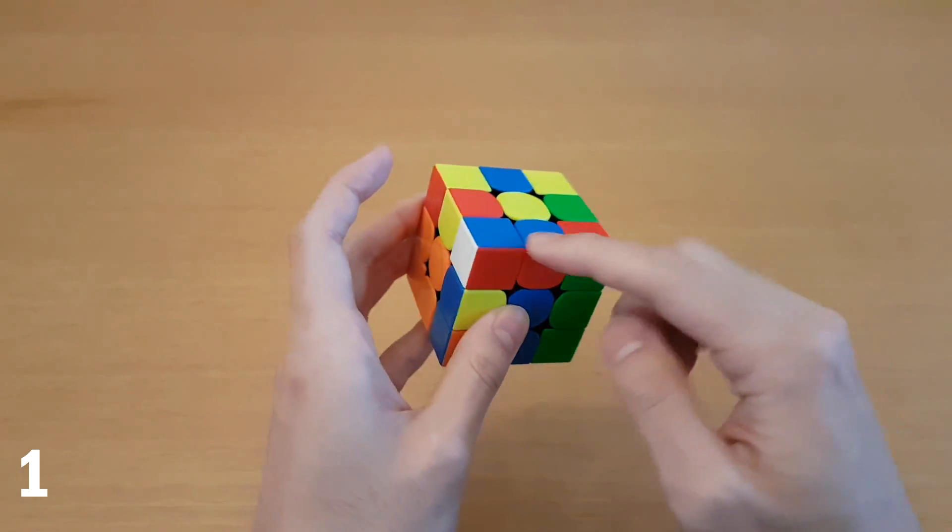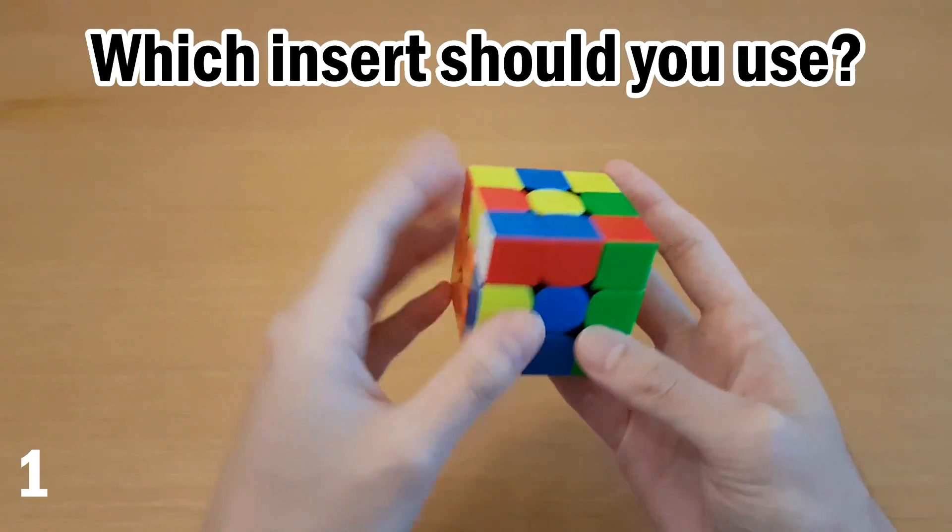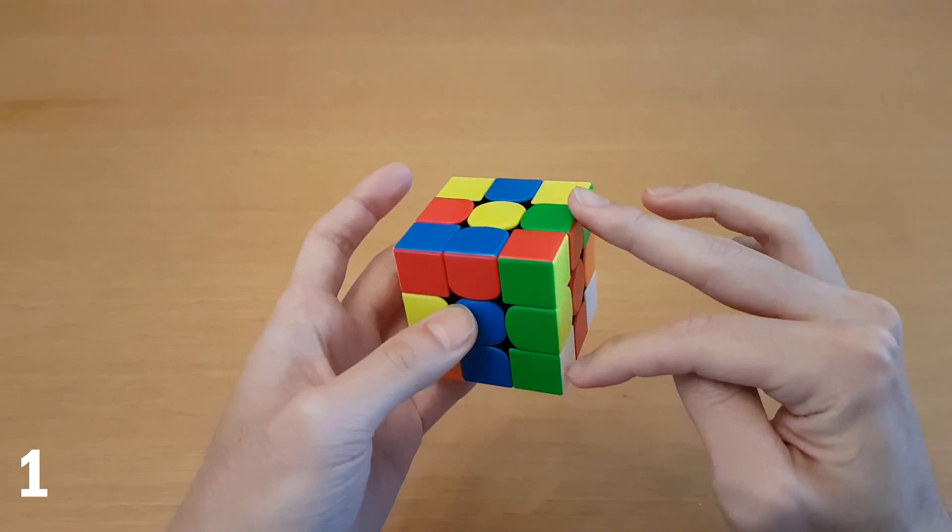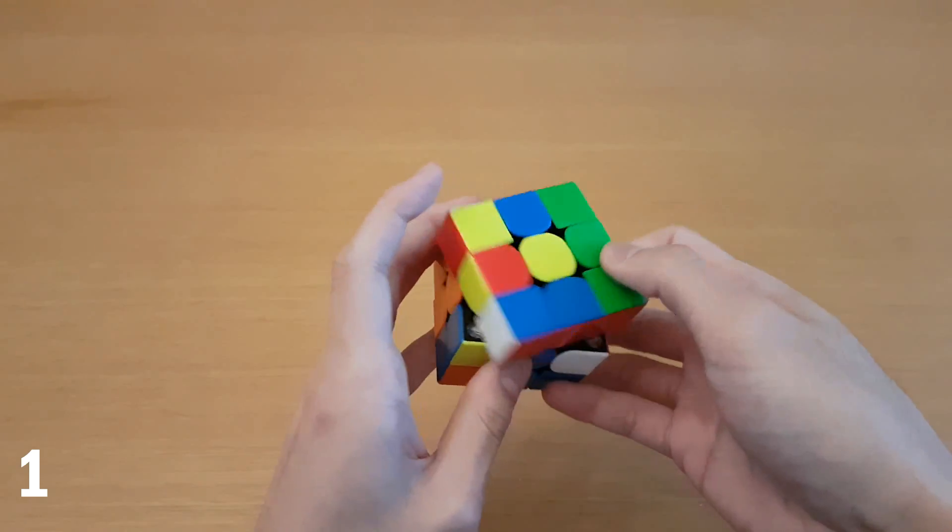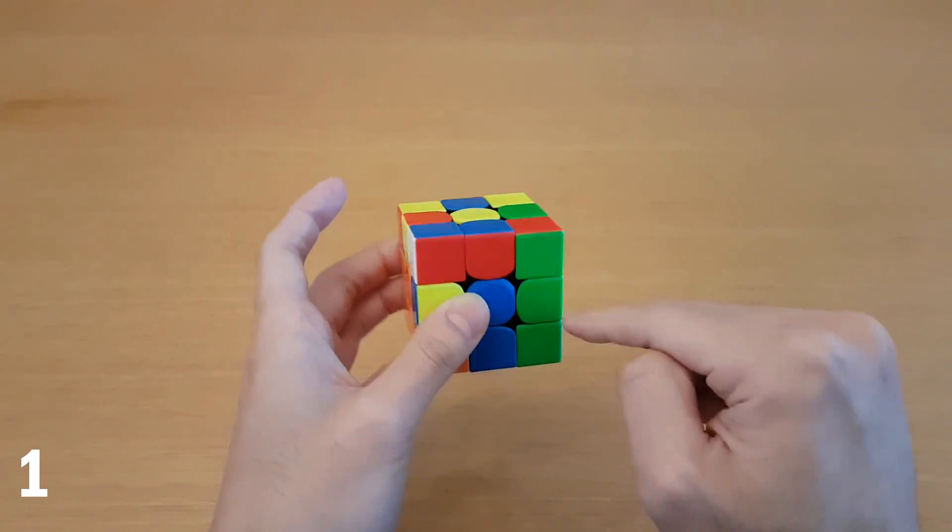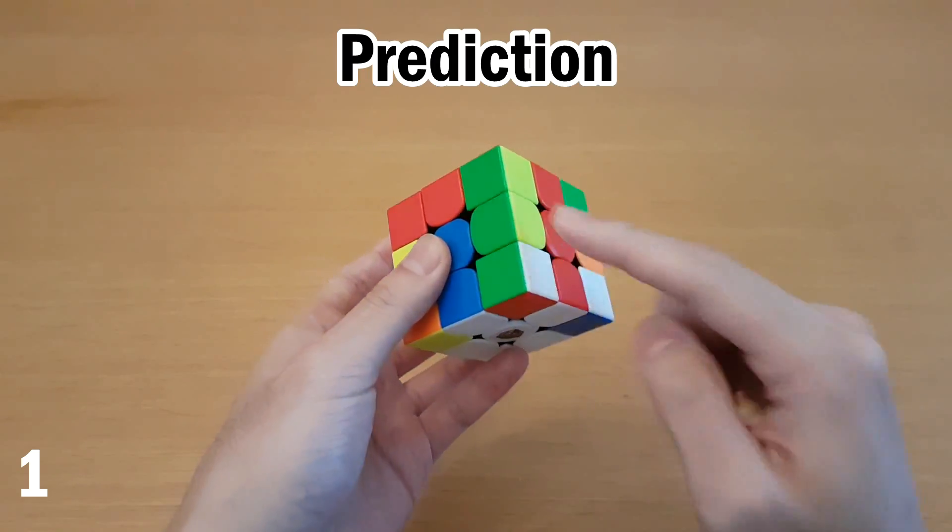I showed you one case, but I don't expect you to memorize this one exact multi-slot case. In general, how can you know which one you should use? If you were not thinking about the second slot, then the most efficient way to solve this is like this. So if you have not predicted what comes up next, then you should always just solve it normally.